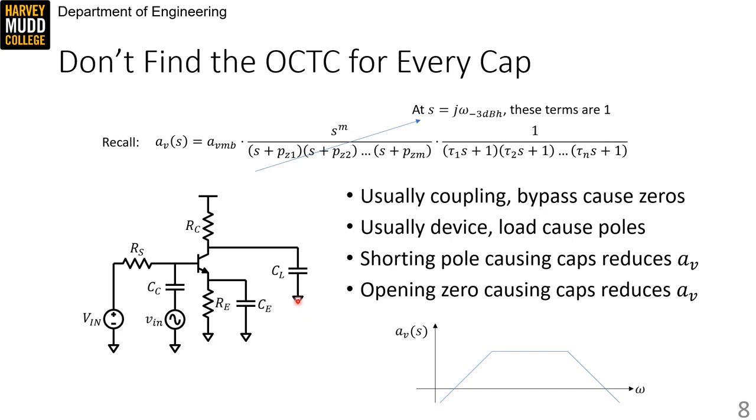So the classic example here would be CL. If I replace that with a short, my gain goes to zero. So CL must be a high frequency pole causing cap.